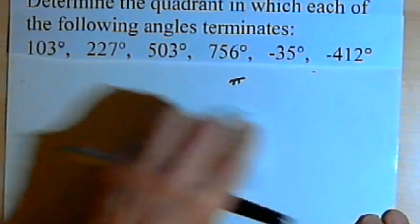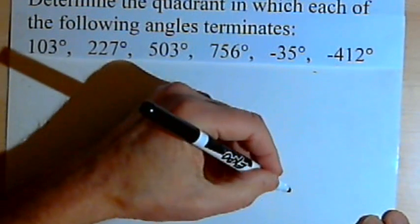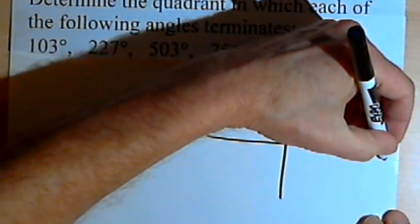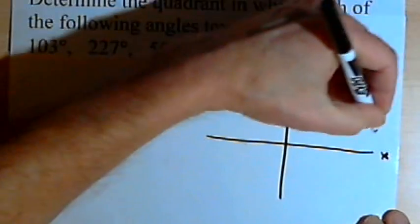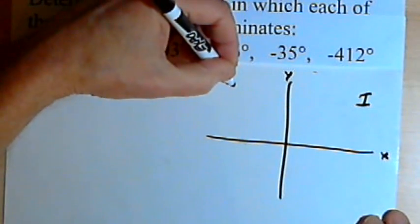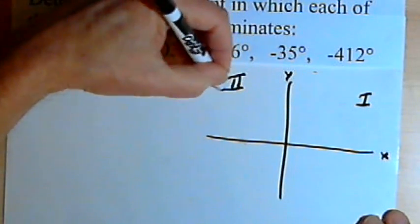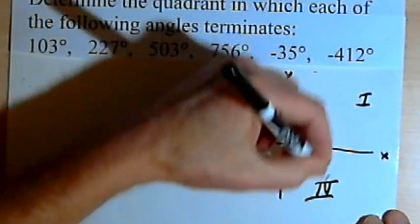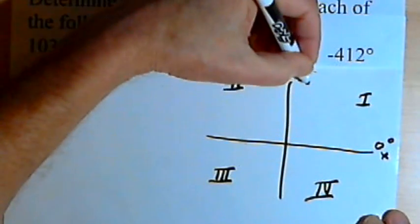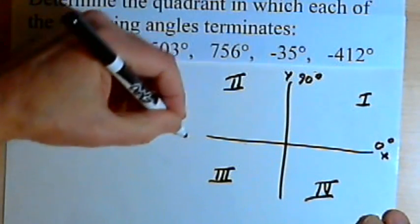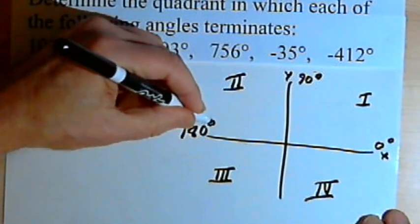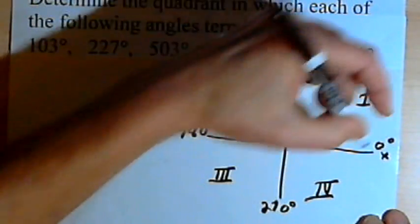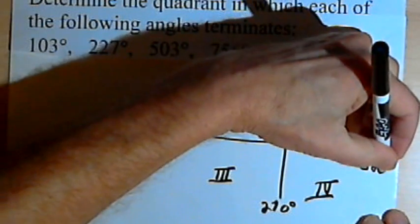Now let's deal with negative angles. Here again is the x-axis and y-axis with the first, second, third, and fourth quadrants. Starting at 0 degrees, going to 90 degrees, 180 degrees, 270 degrees, and a full circle is 360 degrees.